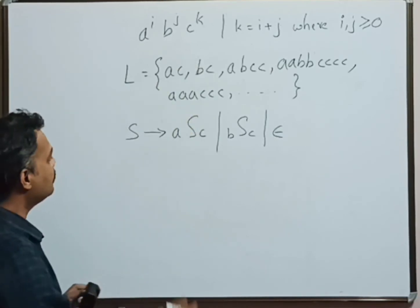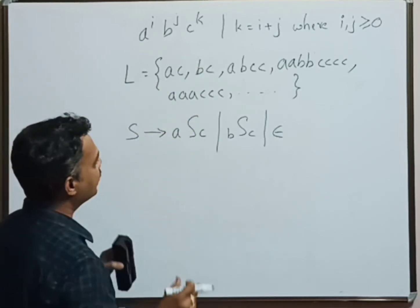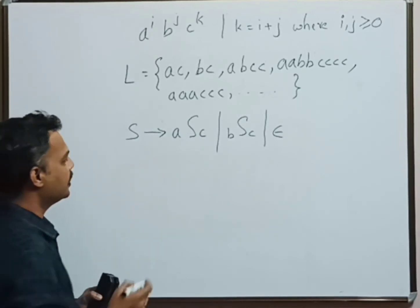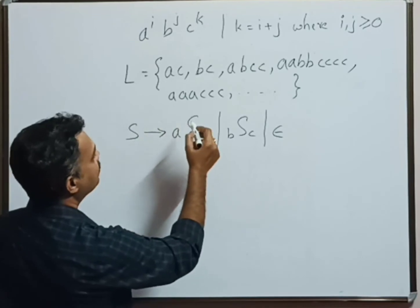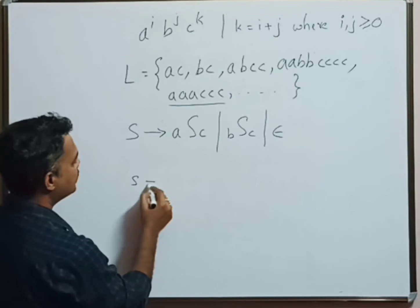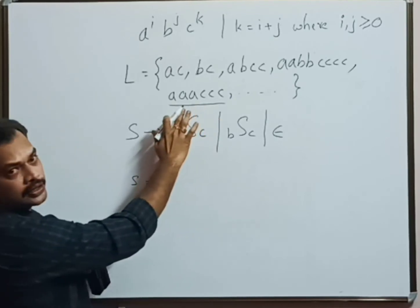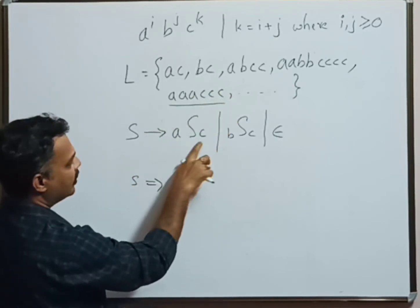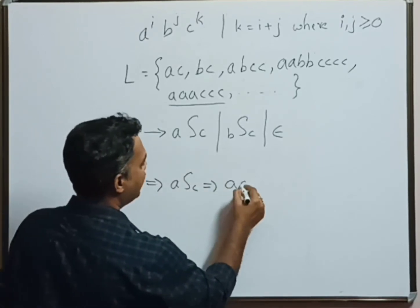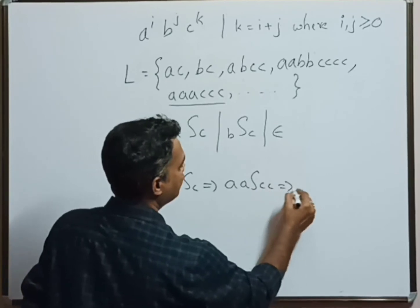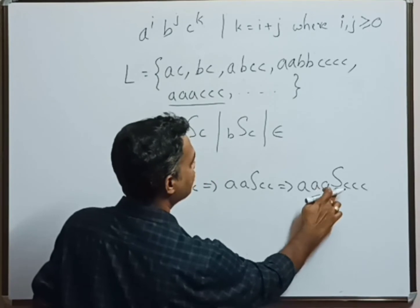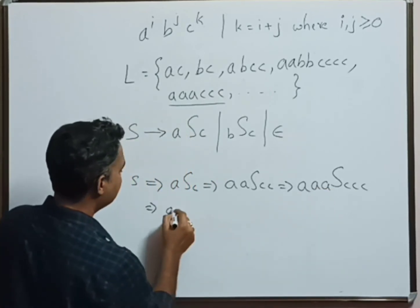Now let us derive one particular string and cross verify whether we have framed the proper CFG or not. Let us take this string. We need three a's and three c's. So first rule we can apply: aSc, then aaScc, then aaaSccc. Now replace S by epsilon, you get the required string.